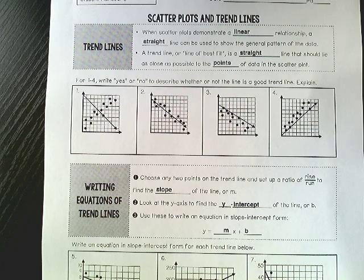A trend line, or we often call it the line of best fit, is a straight line that should lie as close as possible to the points of data in the scatter plot.